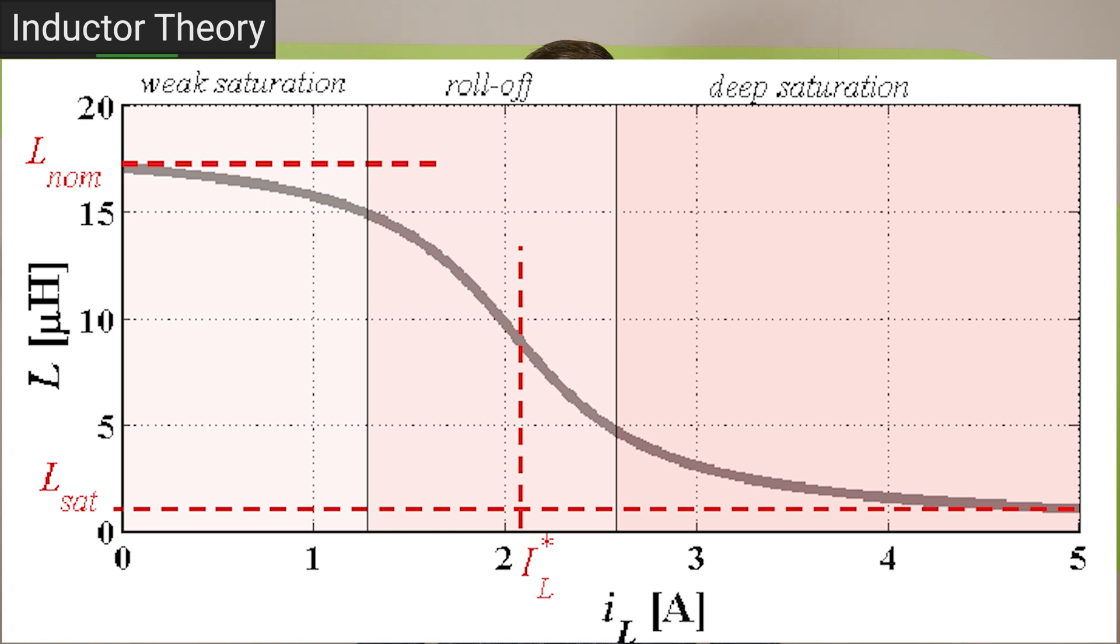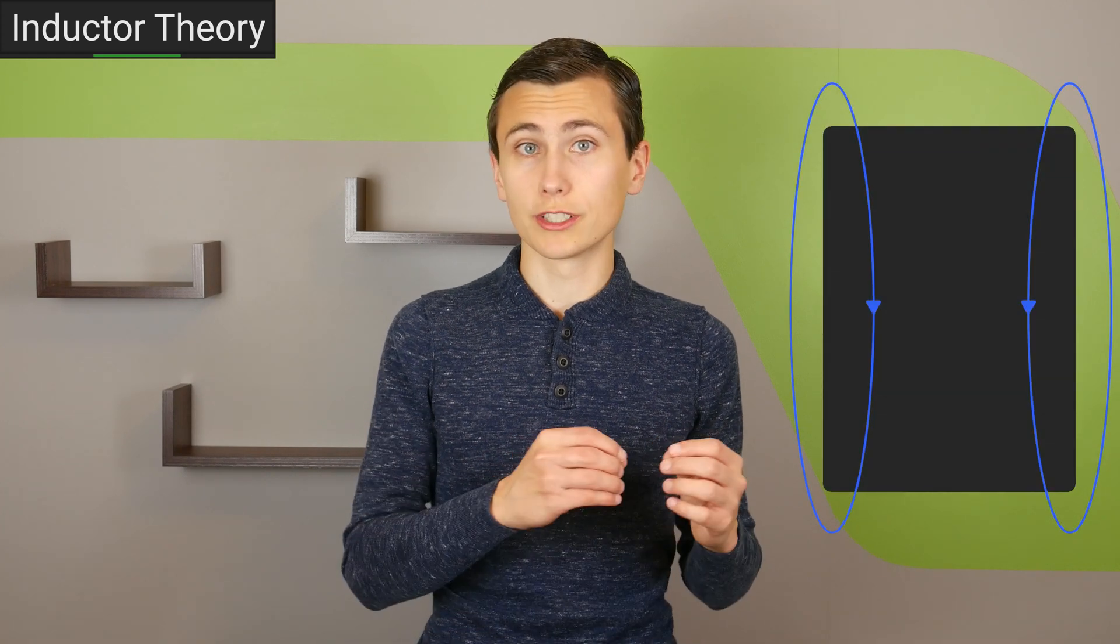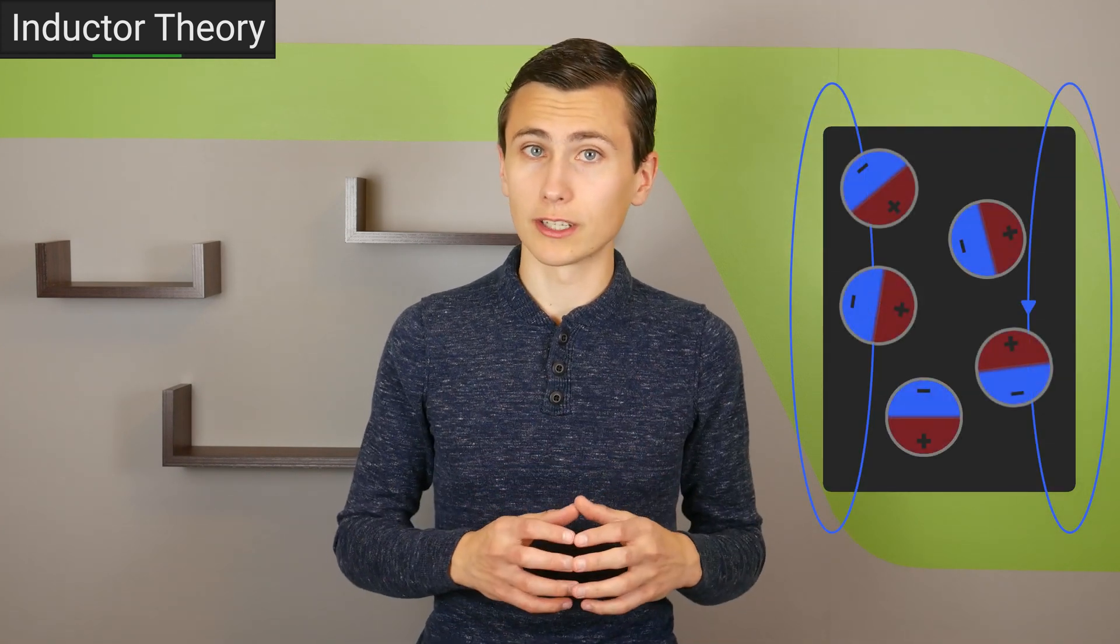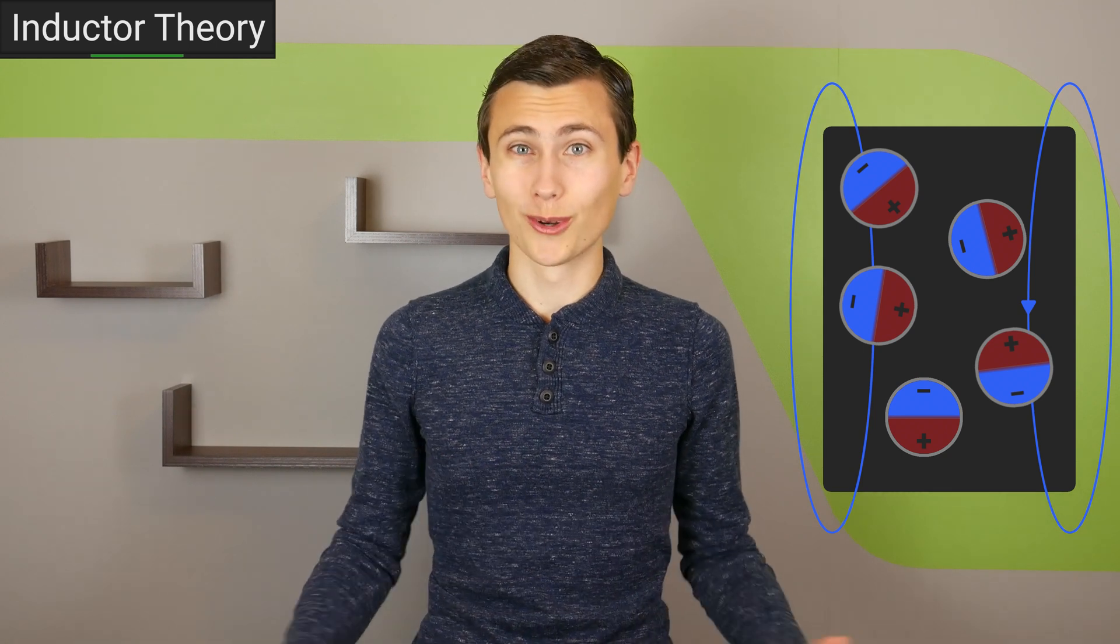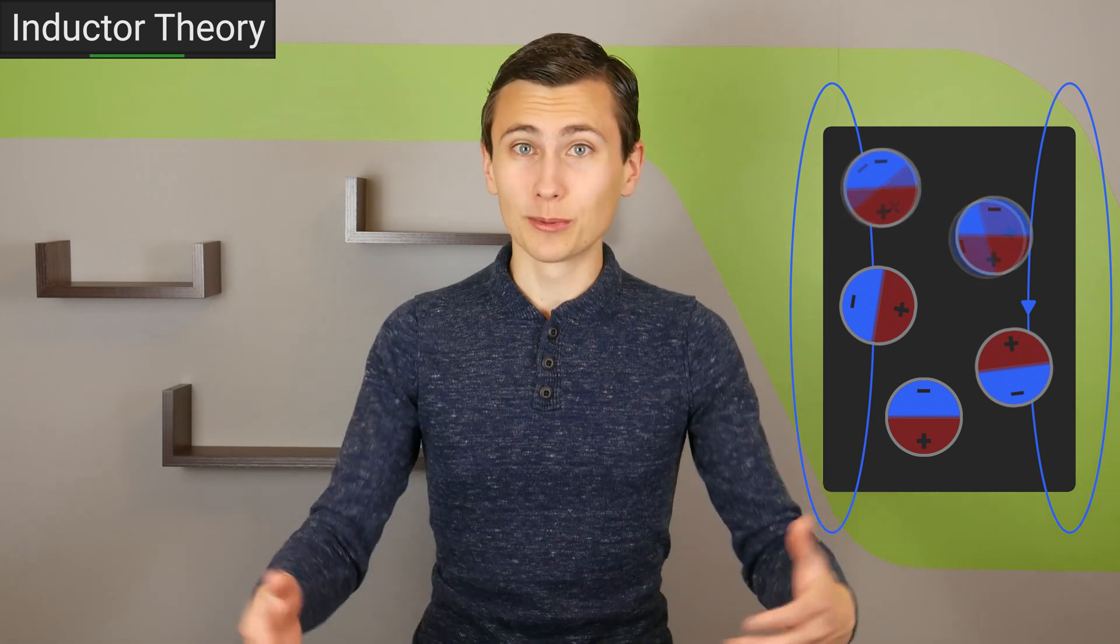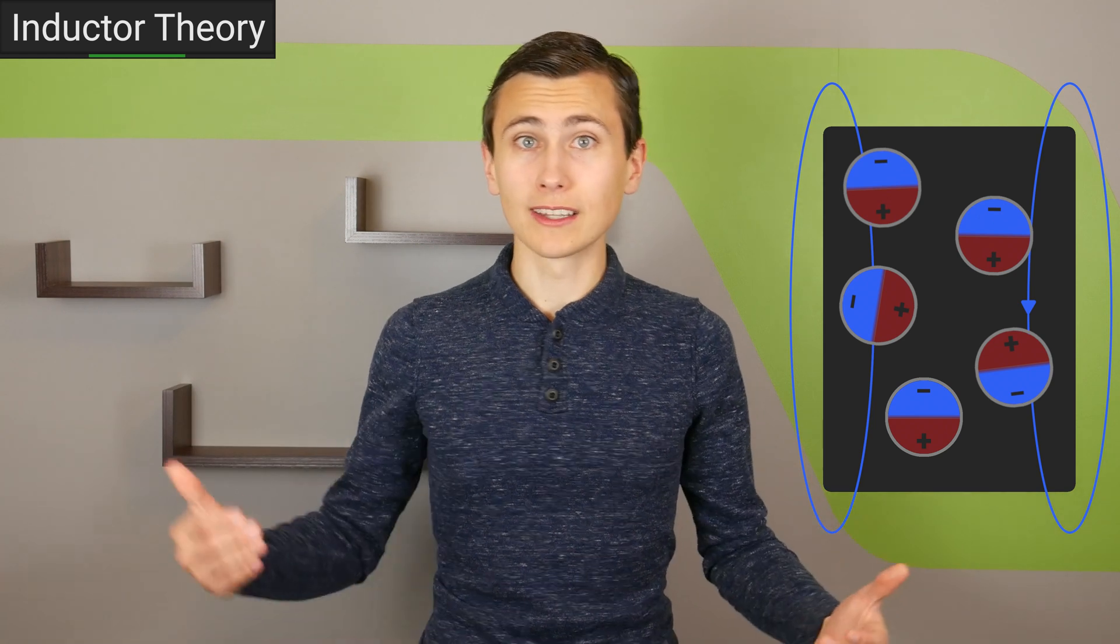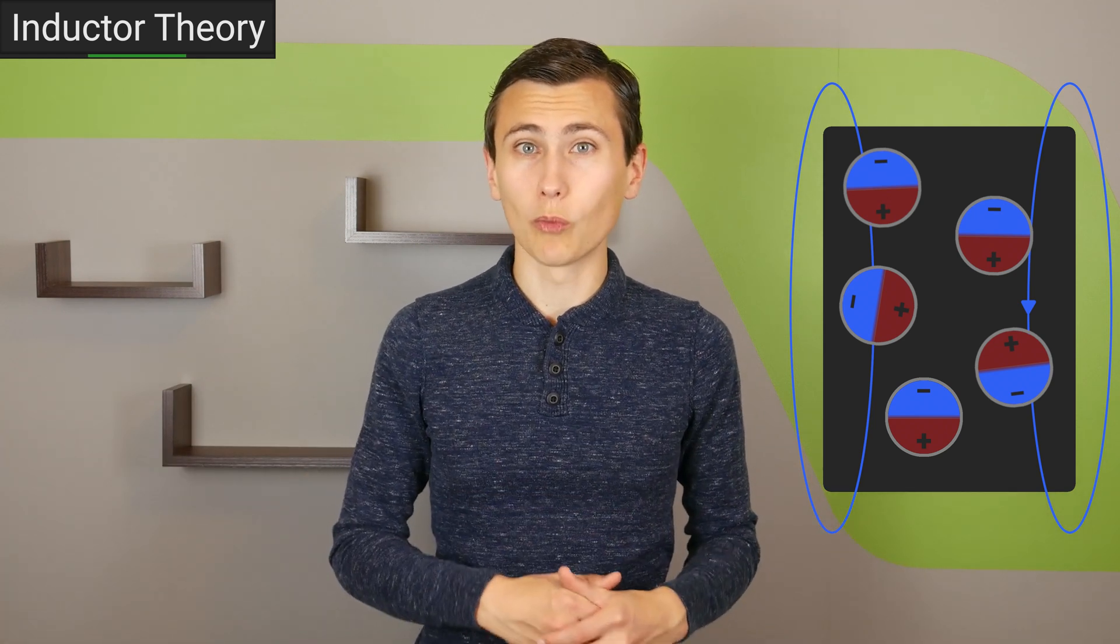The reason why this occurs is due to some physics within ferrous core materials containing iron. There are many small regions within a core that have a polarity and they're usually aligned in random directions. As we apply more and more current to this inductor, these regions, more of them are aligned to the same polarity as the field applied to it by the windings.